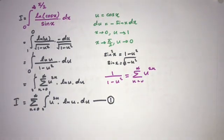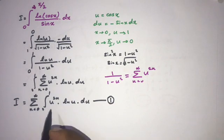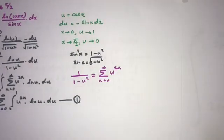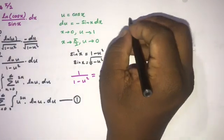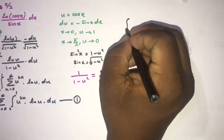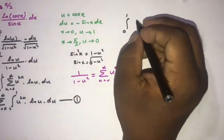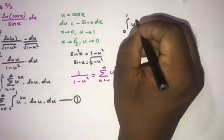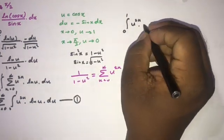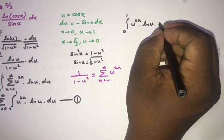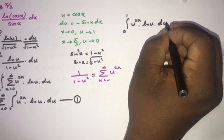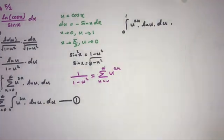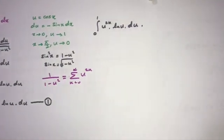Now we have the sub-integral from 0 to 1 of u^(2n) times ln(u) du. How to evaluate this integral?